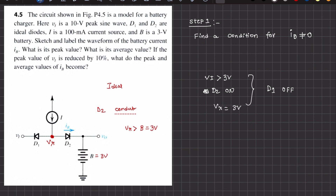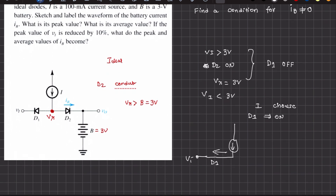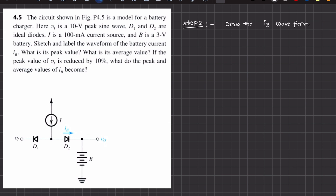We should note that whenever D2 starts conducting, the anode voltage of D2 must be greater than 3 volts, which happens when VI is greater than 3 volts. For VI less than 3 volts, the current chooses the shortest resistance path through D1, because when D1 is on, the whole current flows through D1 since it offers no resistance and is short-circuited. D2 does not conduct when VI is less than 3 volts.